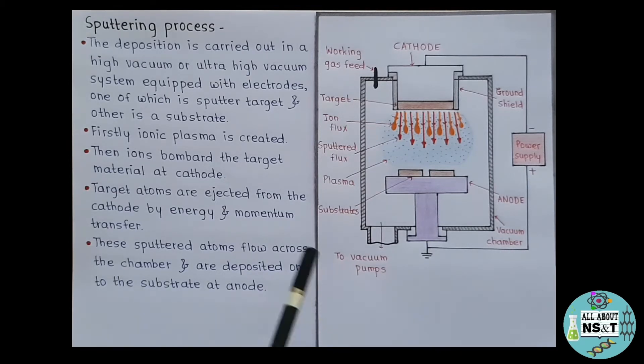The deposition is carried out in a high vacuum or ultra high vacuum system. So, as you can see, this is our vacuum chamber where we carry out the sputtering procedure and it is provided with gas introduction facility. This system is equipped with two electrodes, one of which is a sputter target at cathode and other is a substrate at anode. So, firstly, ionic plasma is created.